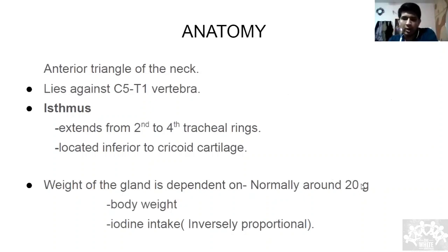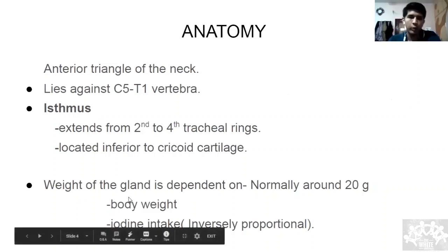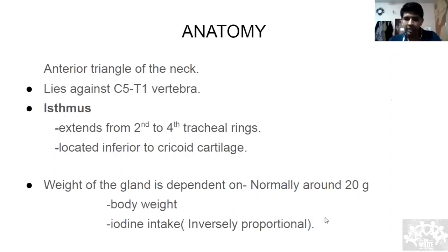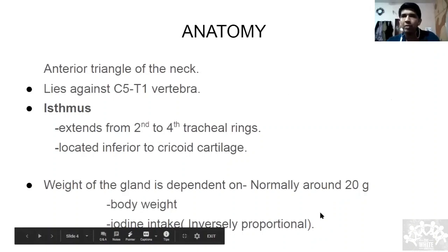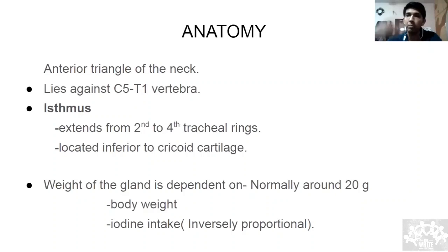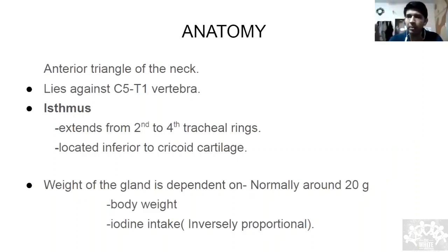Normally the thyroid gland weighs around 20 grams, depending on body weight. It also depends inversely on iodine intake — if a patient's diet is iodine-deficient, they will have a goiter, meaning the thyroid enlarges and weighs more. If iodine is sufficient, the weight of the thyroid will be less. That is what inversely proportional means here.